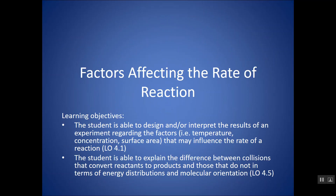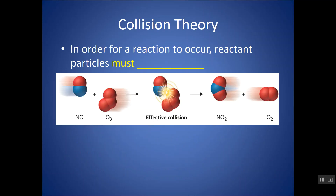Let's start looking at factors that might affect the rate of reaction — we usually want to increase the rate. Before we do that, we have to look at collision theory. Collision theory, as it sounds, is that reactant particles must collide in order to react. So if I have a reaction between NO and O3, they have to collide with each other in order to change into new products.